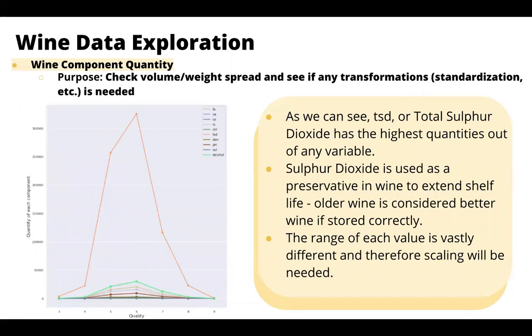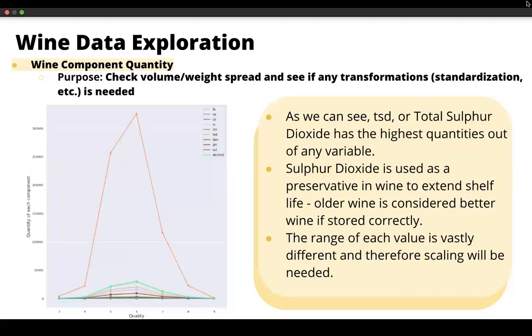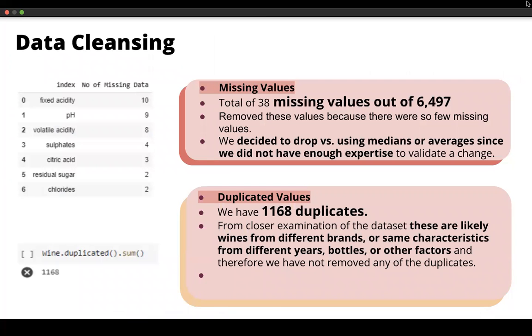Here we are seeing that the highest quantity in wines of any of the physiochemical properties is total sulfur dioxide. Sulfur dioxide is used as a preservative in the wine to extend its shelf life. We all know that older wines are considered better wines. But the thing that we really noted was the range of values is very great. So that we're definitely going to have to do some transformation with some standardization. I'm going to pass you on to Vivian who will now speak about data cleansing.